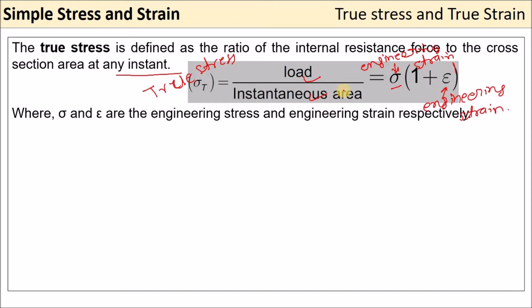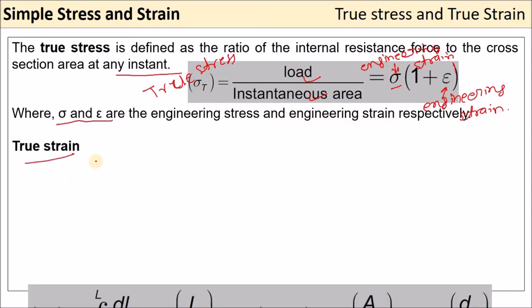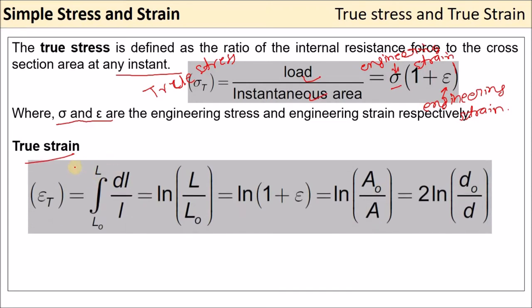Engineering strain means we are calculating load divided by the initial area — without any reduction in area. σ and μ are engineering stress and strain. Now, how we can find out true strain.